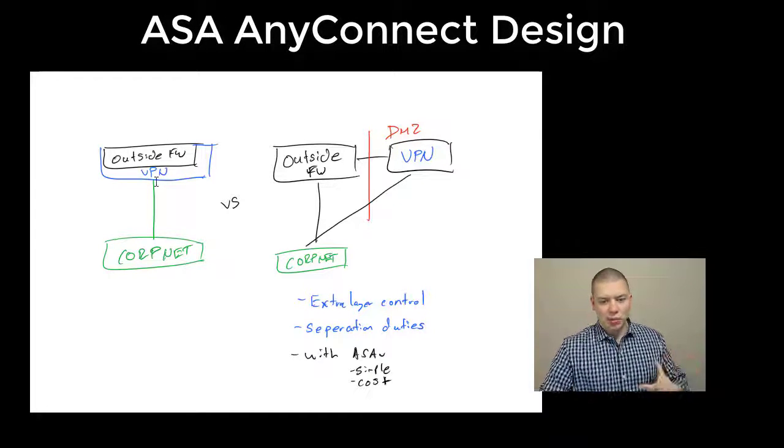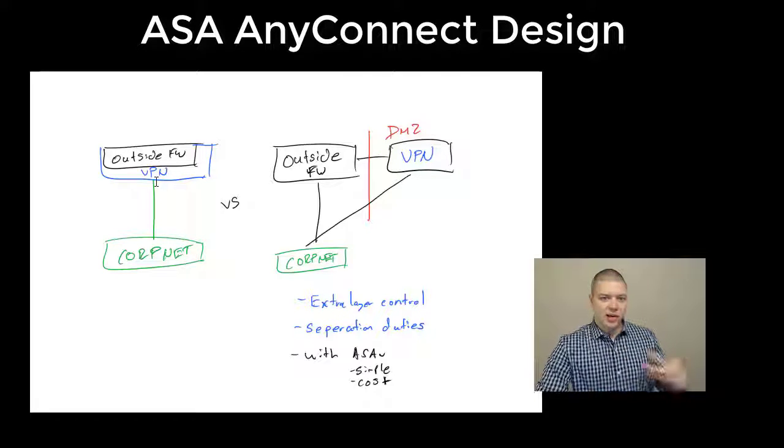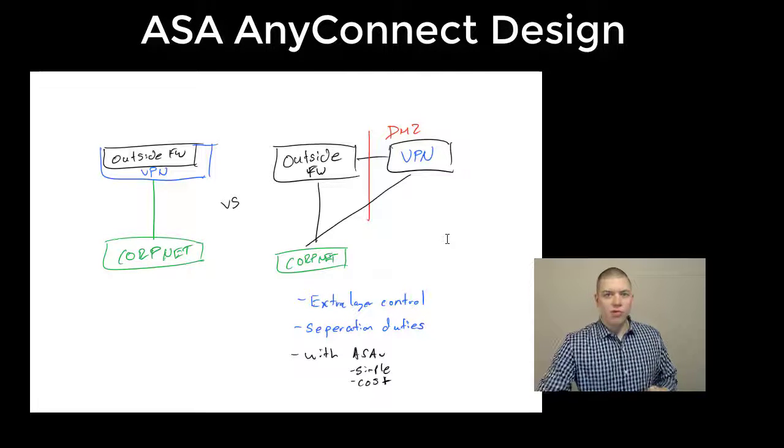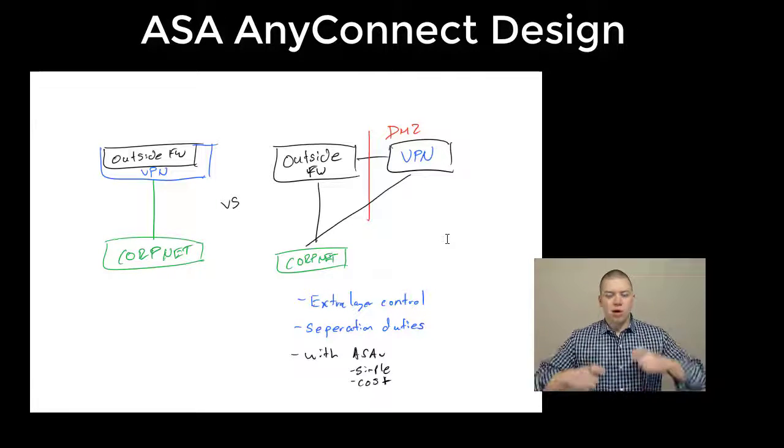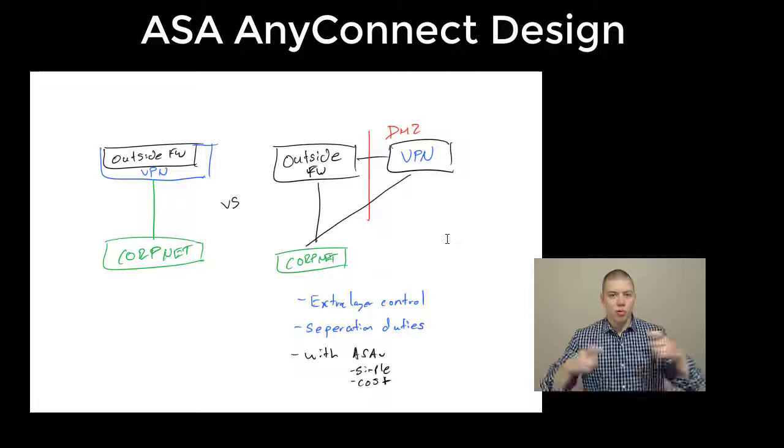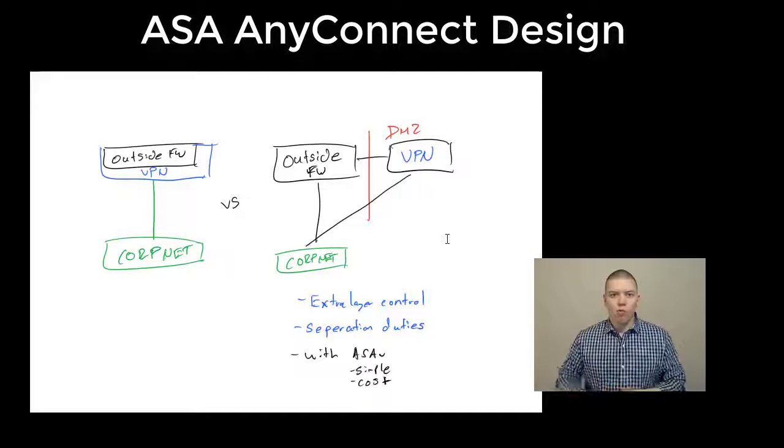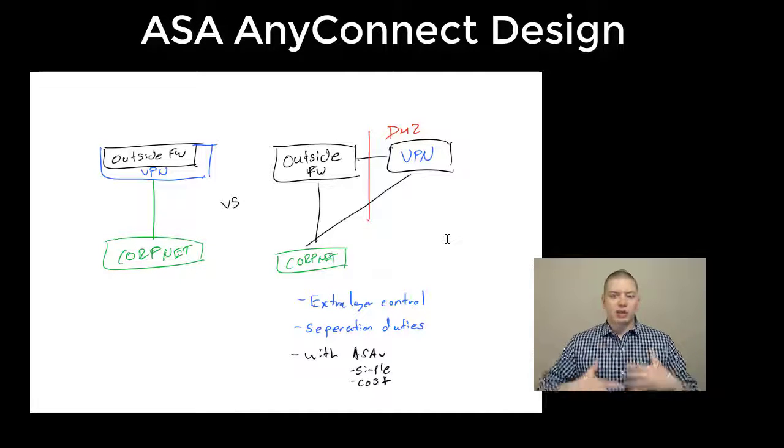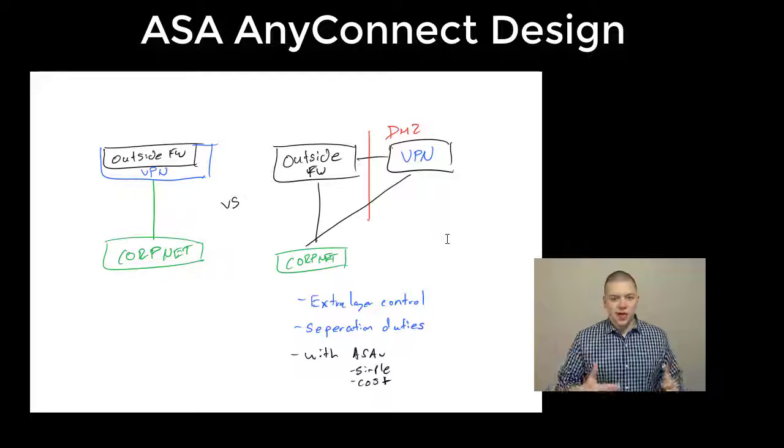Here is the typical way we have our external firewall with VPN services on that firewall. I come from the school where I like to break those layers out. I like to have my perimeter firewall be the perimeter firewall and perimeter rules, and then I like to break out a separate firewall for like an old school VPN concentrator. This gives me an extra layer of control between my VPN clients and the inside of my network.